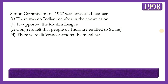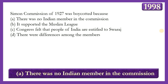Next question: Simon's Commission of 1927 was boycotted because? Options: there were no Indian members in the commission; it supported the Muslim League; Congress felt people of India were entitled to Swaraj; or there was difference among members. The answer is option A — there were no Indian members in the commission. The commission consisted of seven British members of parliament under Sir John Simon. Since there were no Indians, it was completely boycotted by the Indian masses.